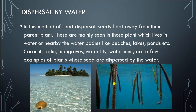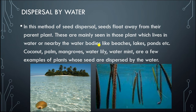Now we are going to learn about dispersal by water. In this method of seed dispersal, seeds float away from their parent plant. These are mainly seen in plants which live in water or nearby water bodies like beaches, lakes, ponds, etc. Coconut, palm, mangroves, water lily, and water mint are a few examples of plants whose seeds are dispersed by water.